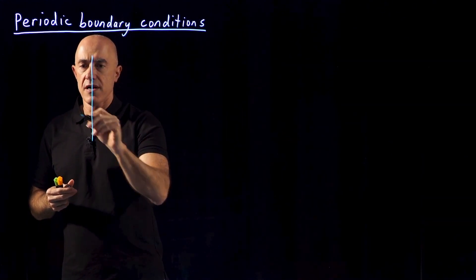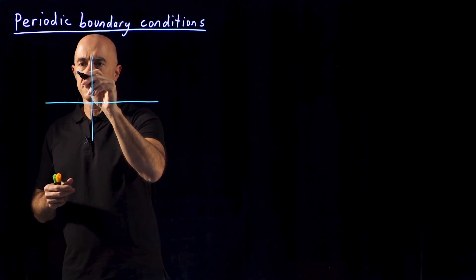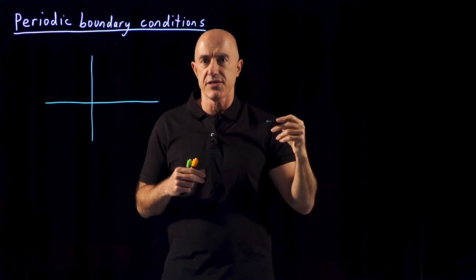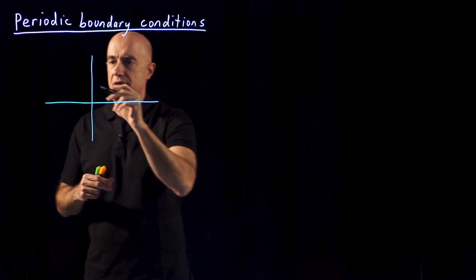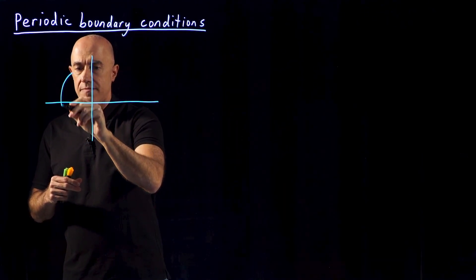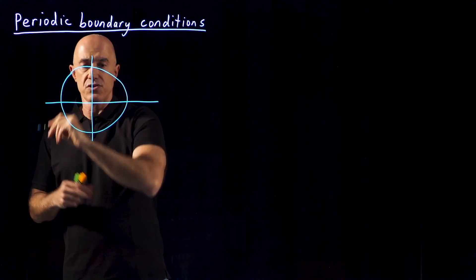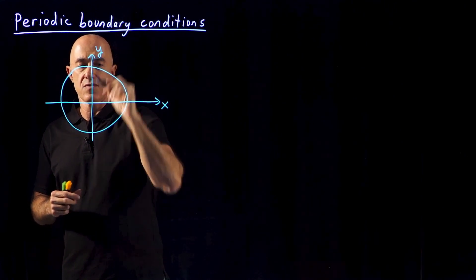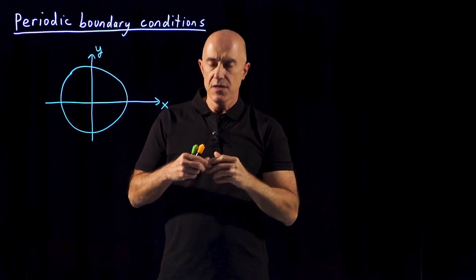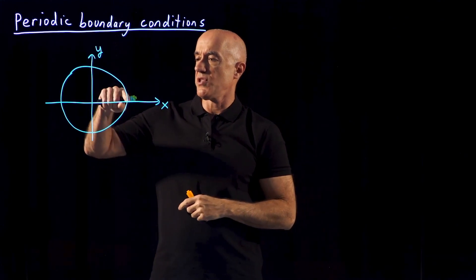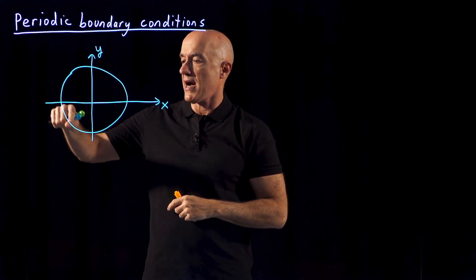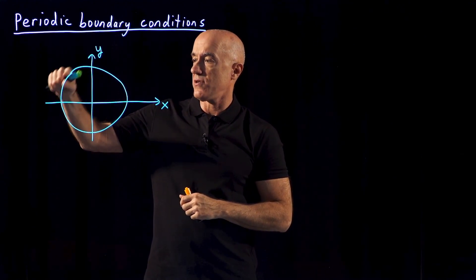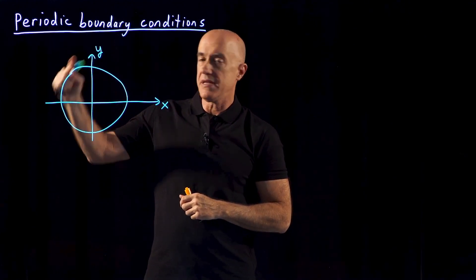If we draw our domain — this is not necessarily the cylinder but just some circle with the cylinder in the center — I can illustrate the periodic boundary conditions. This is x and this is y. To implement periodic boundary conditions, we know that the flow field is periodic in the angle theta because after theta goes from zero to two pi it repeats itself.